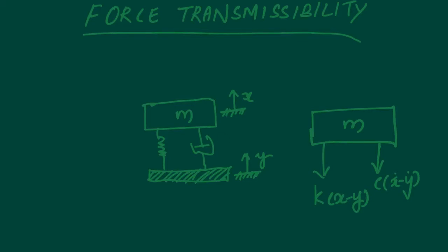Force transmissibility is a quantity that tells us how much force is getting transferred to an object. Let's say we have a very precise measuring instrument mounted on a platform. If the platform is vibrating harmonically for some reason, we want to figure out what force the instrument is experiencing so we can account for it in our design.